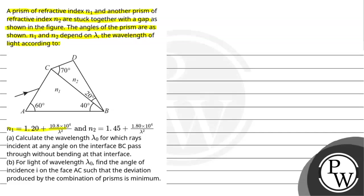The value of n1 and n2 are given. First part: calculate the wavelength lambda naught for which the light ray is incident at any angle on the interface and passes without bending at the interface. Second part: for light of wavelength lambda naught, find the angle of incidence on face AC such that the deviation produced by the combination of prisms is zero.